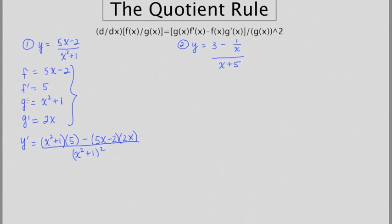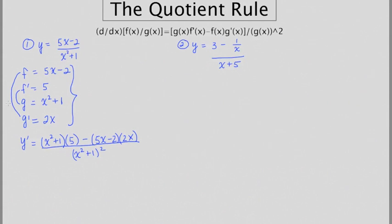And this is all going to be over the bottom function squared. A helpful technique: the bottom times the derivative of the top minus the top times the derivative of the bottom. Some people choose to think about it as the product of the inner functions minus the product of the outer functions when written in this way — if that helps you, go for it.